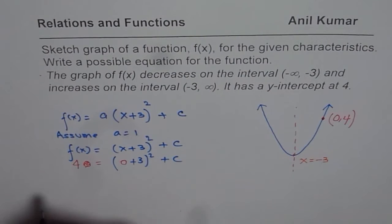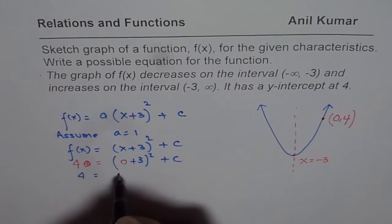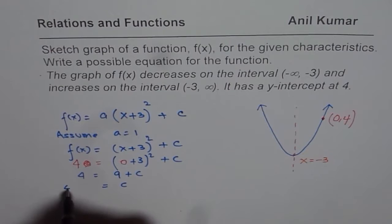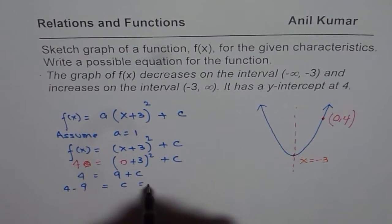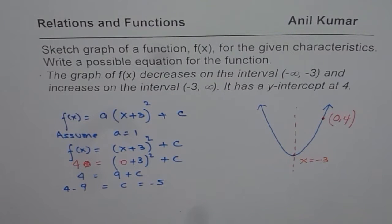So we can now find c which is 4 equals 9 + c, or c equals 4 - 9 and that is clearly -5.